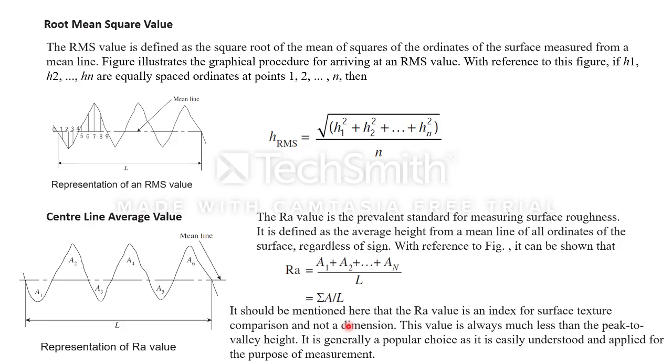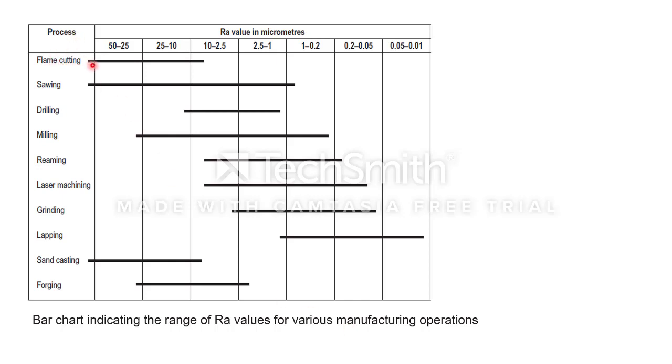Its value varies for every manufacturing process. If the process is flame cutting it varies from 50 to 10, sawing varies from 50 to 1, drilling varies from 10 to 1, milling 25 to 0.2, ramming varies from 7.5 to 0.2, laser machining 7.5 to 0.03, grinding varies from 2.5 to 0.05, lapping varies from 1 to 0.01, sand casting 50 to 10 or 12.5, forging varies from 25 to 2.5. This is how the value of Ra will be varying.